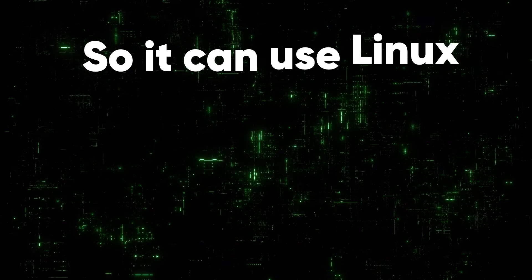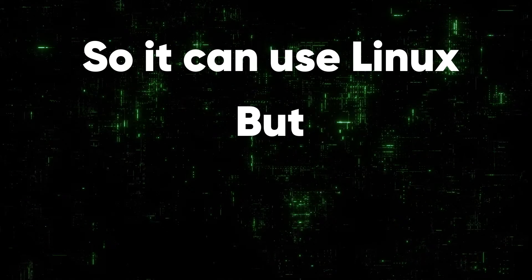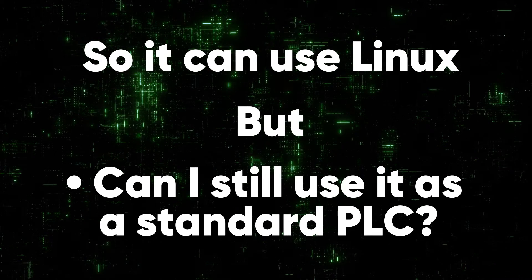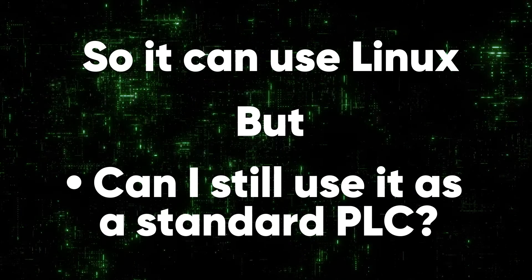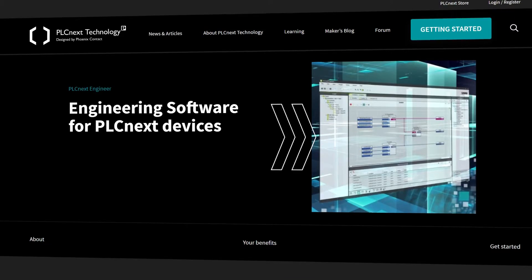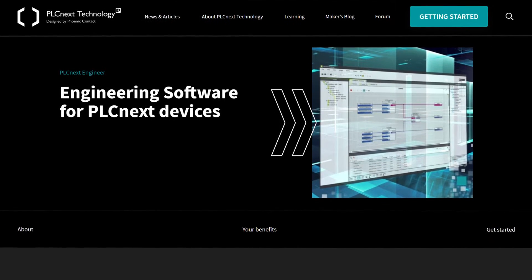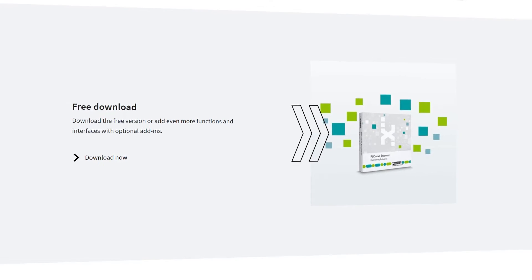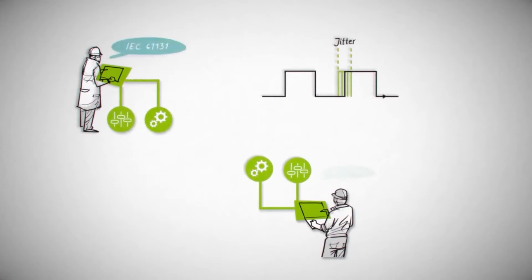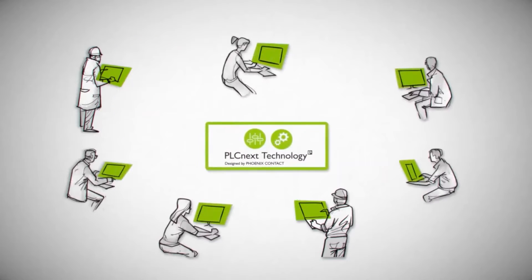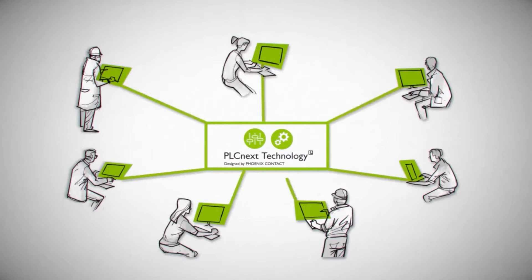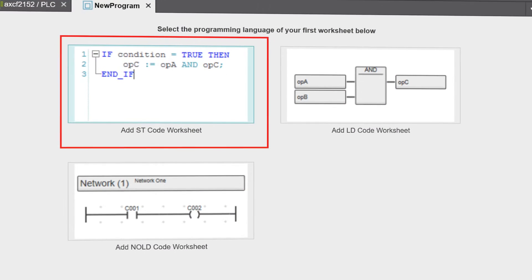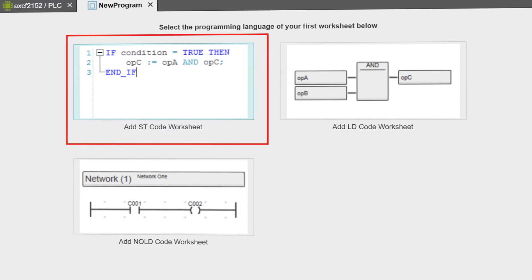So I can interact with Linux, but am I still able to use it as a standard industrial automation PLC? Sure — you don't even really have to touch the Linux side if you don't want to. You can use it as a conventional PLC. We have software called PLCnext Engineer, which is free to download with no development licensing involved. That gives you an IEC 61131 environment that everyone programming PLCs is comfortable with, so you can program in ladder logic, function block diagram, and structured text.